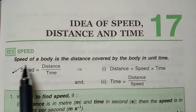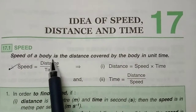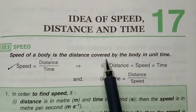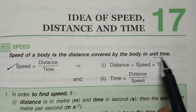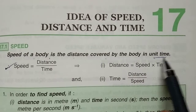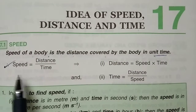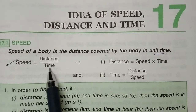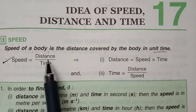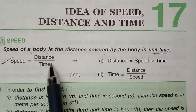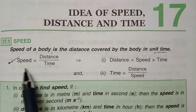What is speed? Speed is the distance covered by a body in unit time. Here we have a formula: speed equals distance divided by time. That means a body covers a distance in a fixed time — that is known as speed.